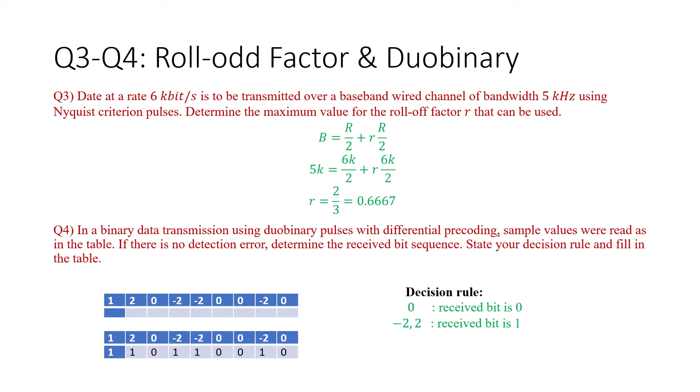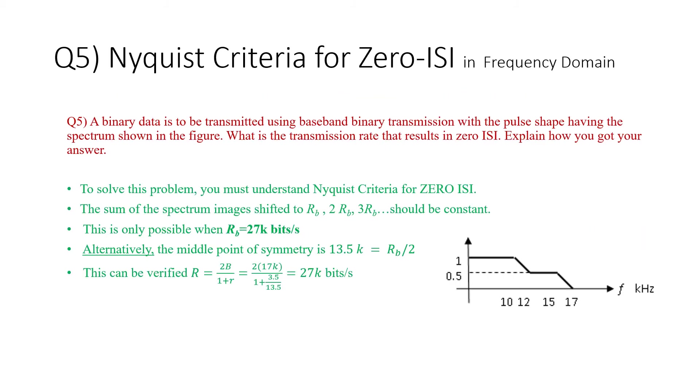Now let's move to the last question which is question number five. Question number five says: a binary data is to be transmitted using baseband binary transmission with pulse shape having the spectrum shown in the figure. This is a single-sided spectrum. You can think of the second side as a continuation of this. And the question is, if we have this spectrum, what is the transmission rate that would result in zero ISI? Explain how you got your answer. To give you a hint, you need Nyquist criteria for zero ISI in frequency domain.